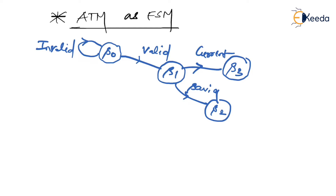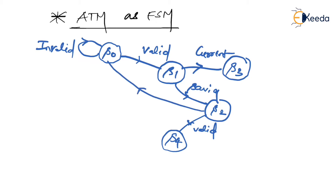In S2, it asks you to enter a valid PIN number, which is generally 4 digits in size. If you enter a valid PIN number, you go to S4 state. If someone enters an invalid PIN number, the machine forces you back to S0 state, and you must remove and reinsert your card and follow the whole sequence again.